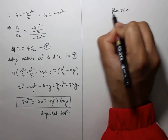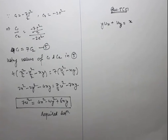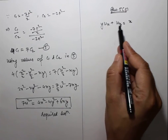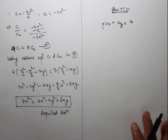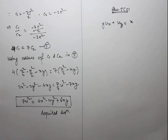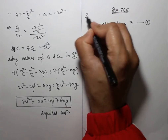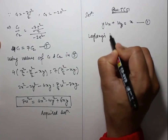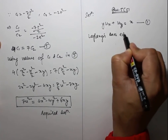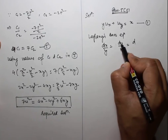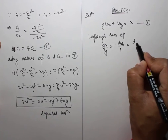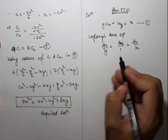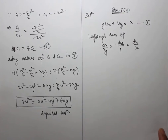Question 5, Part C. Reduce the equation yu_x + u_y = x to canonical form and obtain the general solution. We first convert to canonical form, then find the general solution. The Lagrange auxiliary equation is dx/y = dy/1 = du/x.